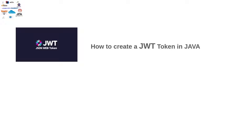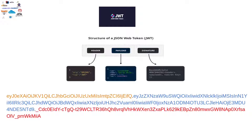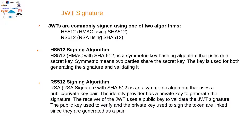Before showing you the code, I will explain the structure of the JWT so that it will help you understand the code better. Each JWT contains three parts: the header, the payload, and the signature. These three parts are separated by a dot.